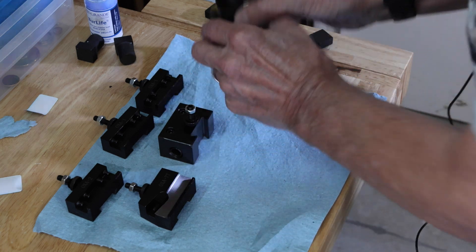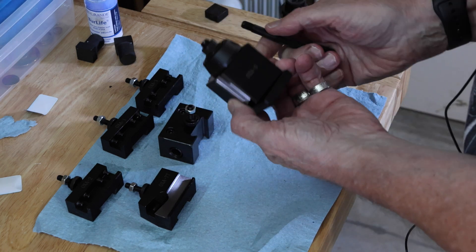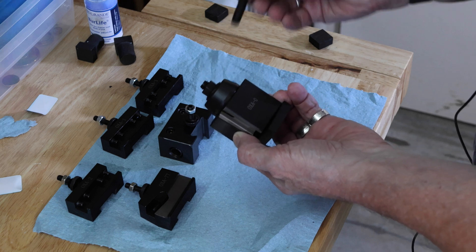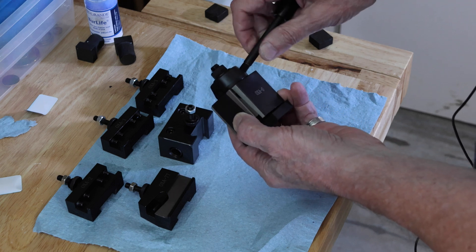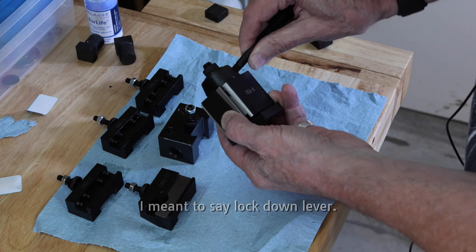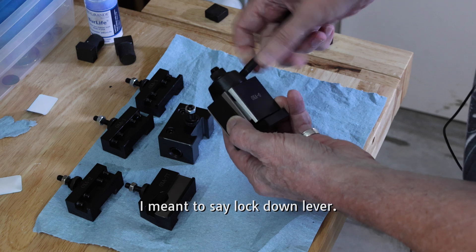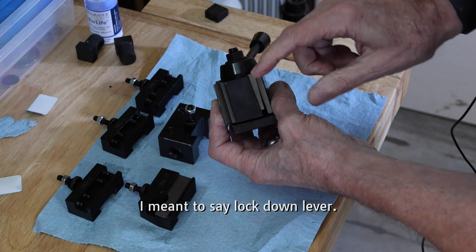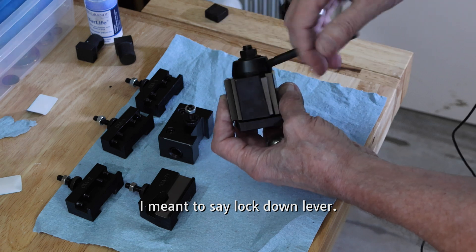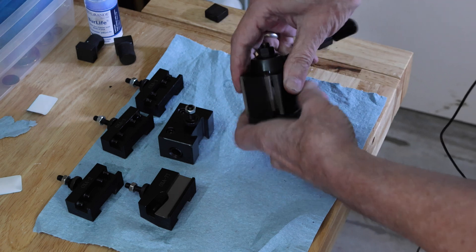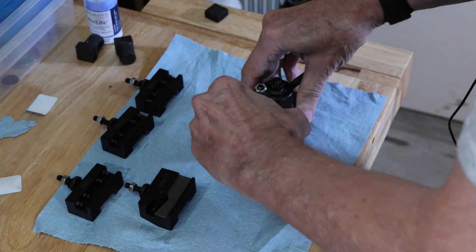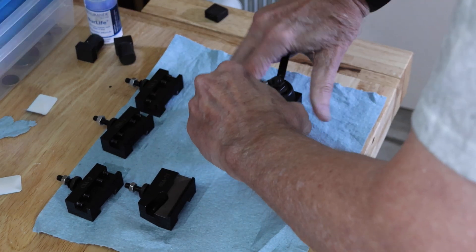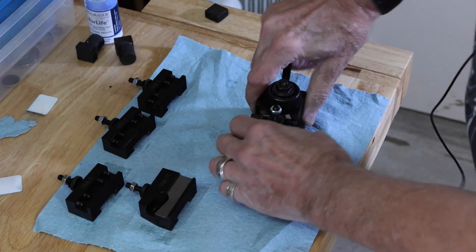So of course it comes with the main body and it comes with this holder. The knob screws in here and this raises this up and down. It's a dovetail to wedge the tool holders in.